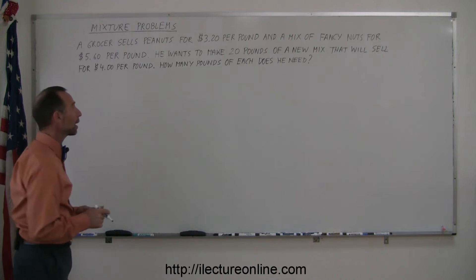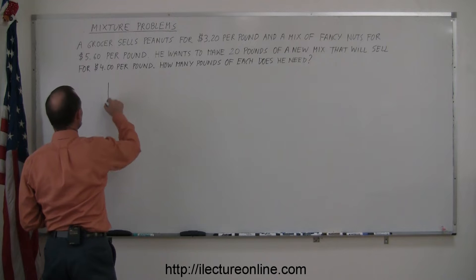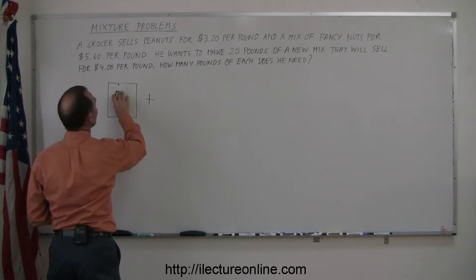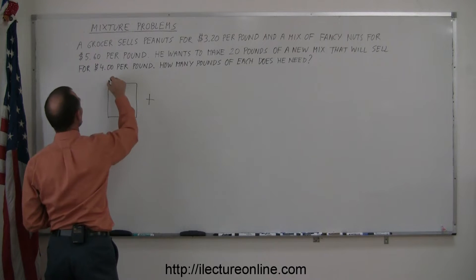Just like with any other mixture problem, it's a good idea to represent each mixture by a box. This represents the mixture with peanuts at $3.20 a pound. So this is peanuts.